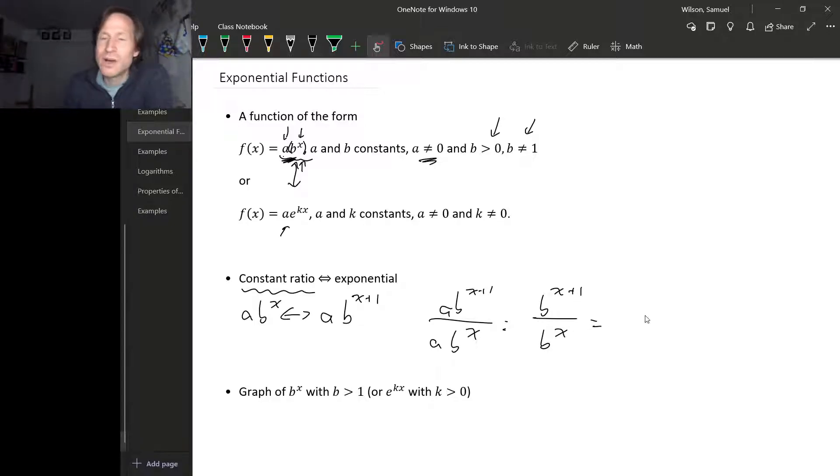We can use the law of exponents to write this as b to the x plus 1 minus x. The minus x is in the exponent here. And this is just b to the first, or b. So you can see, for exponential functions, when you plug in values separated by one, you always get a constant ratio. The key thing is this ratio doesn't depend on x, it only depends on the function.